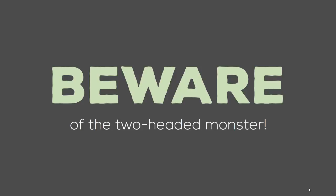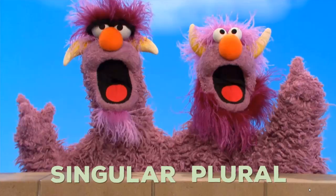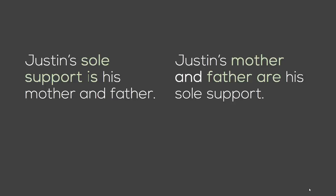Beware of the two hidden monsters — which means the verb can be both singular and plural. For example: Justin's sole support is his mother and father — talking about support, which is singular. But: Justin's mother and father are his sole support — mother and father are two objects, so we use plural. One sentence can be expressed in two different ways, and when the subject changes, you must use the appropriate singular or plural verb.